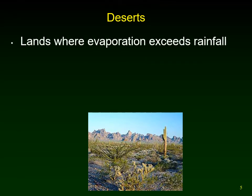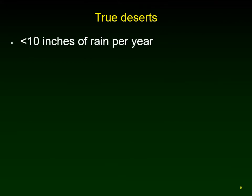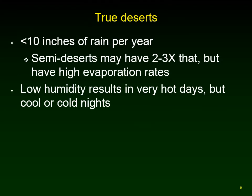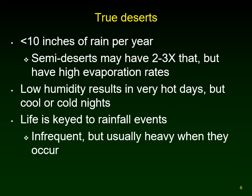Deserts are lands where evaporation exceeds rainfall — evaporation rates can be 7 to 50 times the average. True deserts have less than 10 inches (25 centimeters) of rain per year; semi-deserts have two to three times that but still have high evaporation. Deserts have very low humidity, and since water vapor holds heat like a greenhouse gas, without it the nights get cold — so deserts have very hot days but very cold nights. Many organisms time reproduction to infrequent rainfall events, which often arrive as heavy thunderstorms.